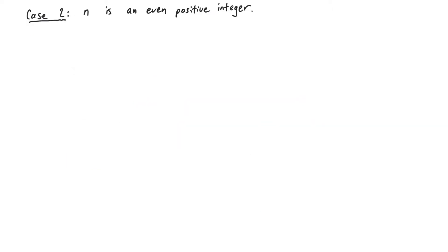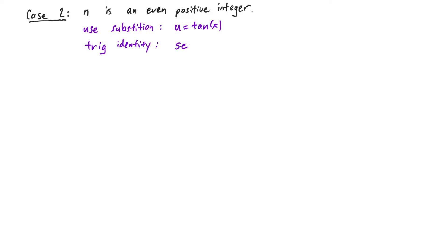The next case we're going to look at is when the power of secant is an even positive integer. What we'll want to do in this case is make the substitution u equals tangent of x. A useful trig identity here is secant squared of x is equal to tangent squared of x plus 1.